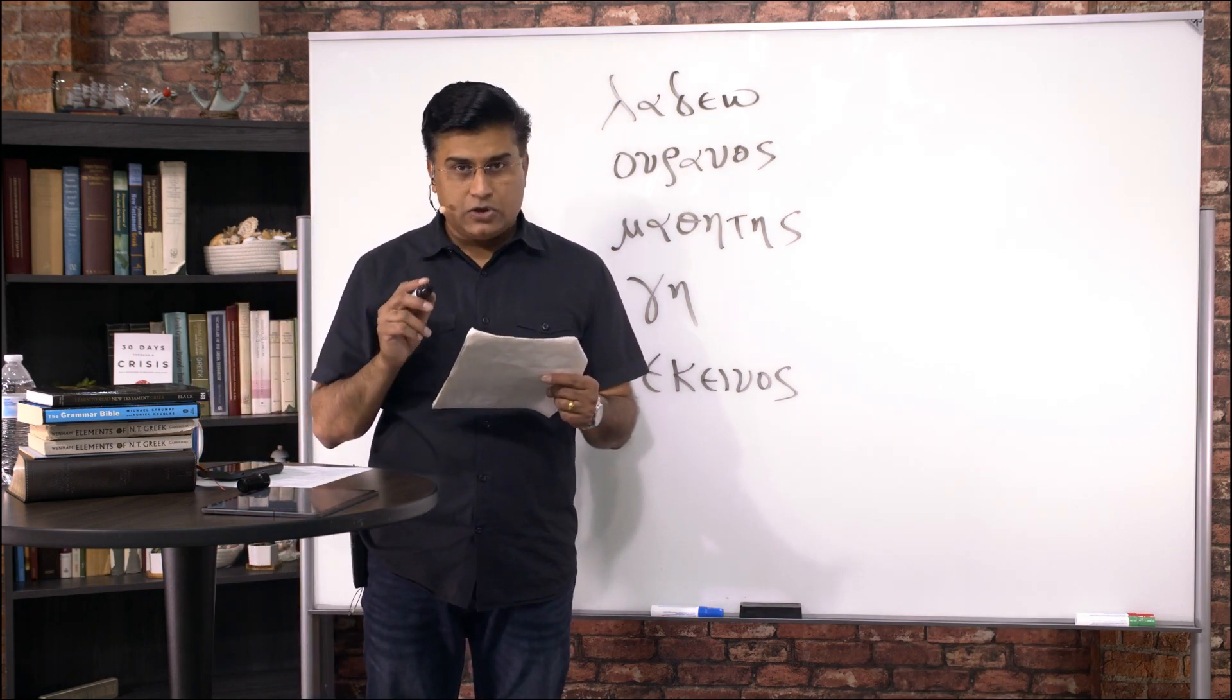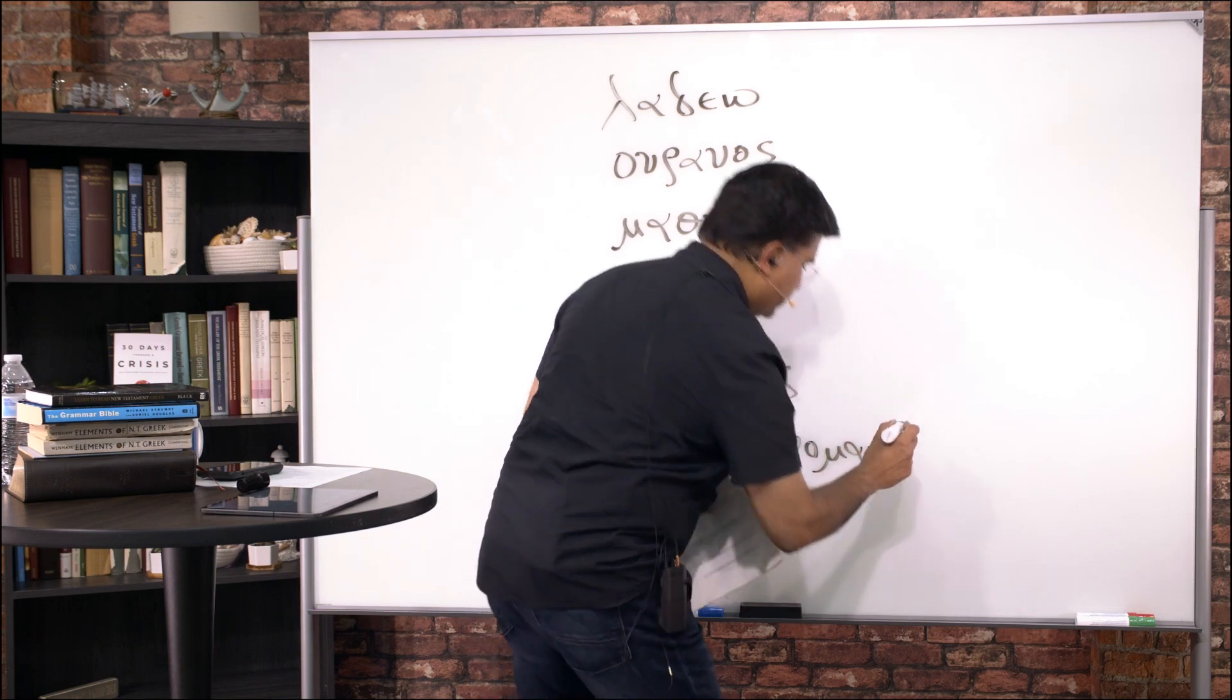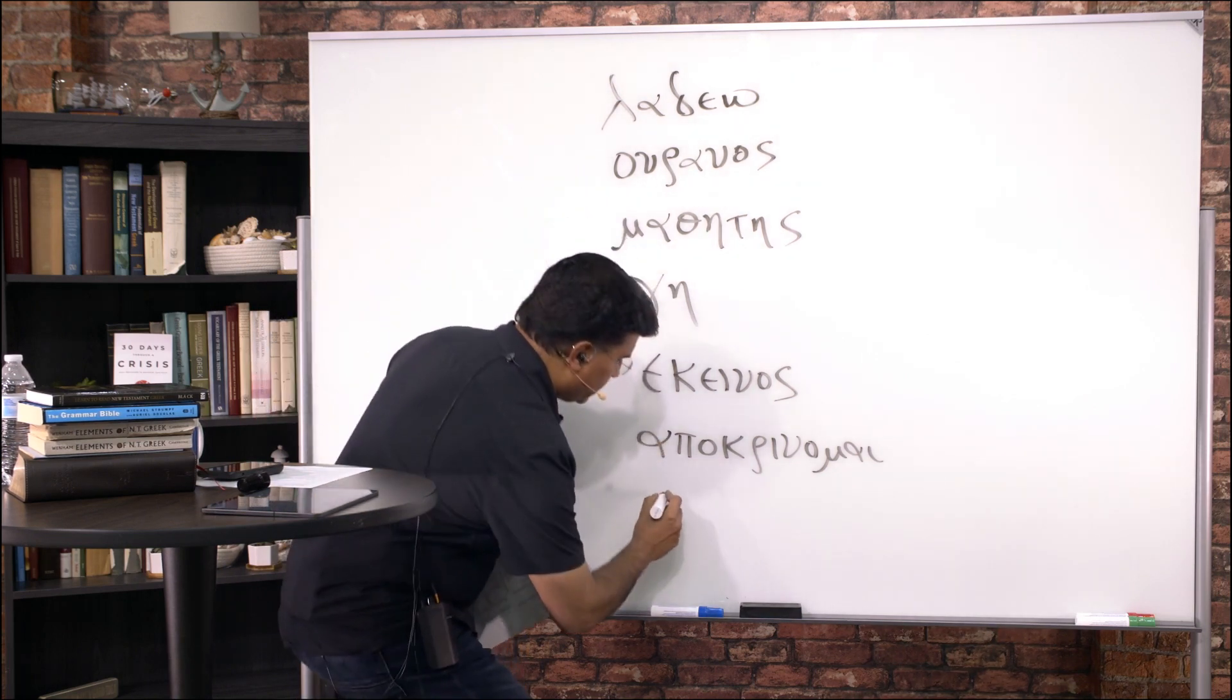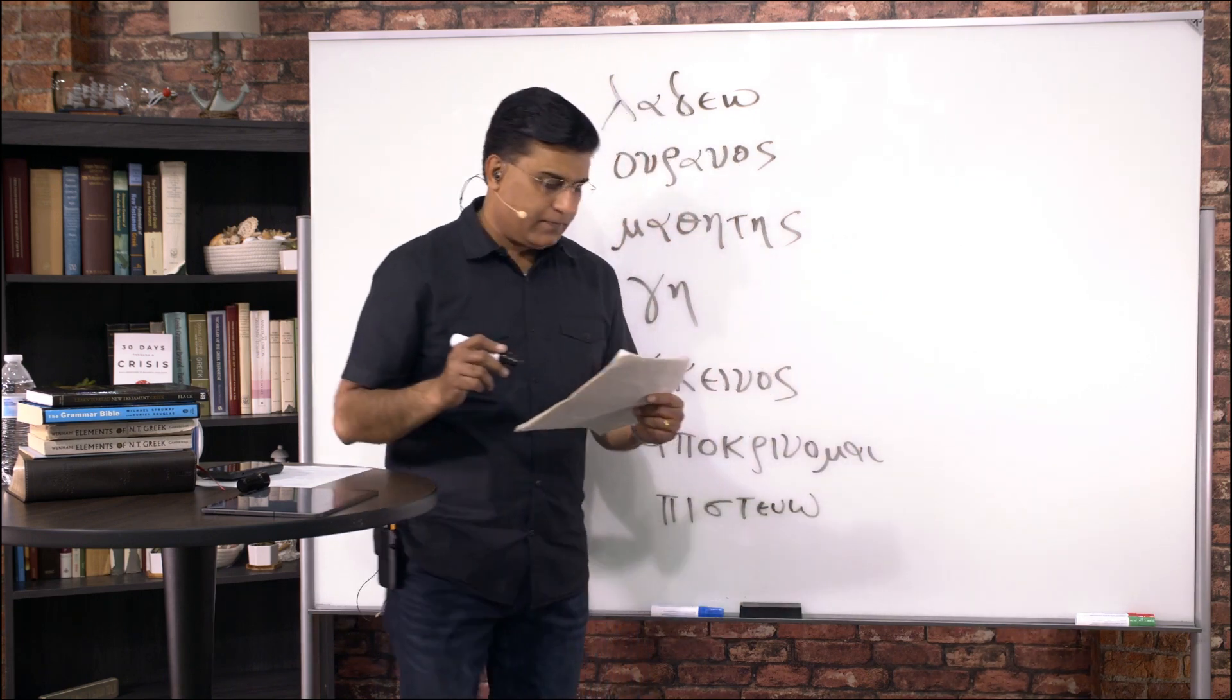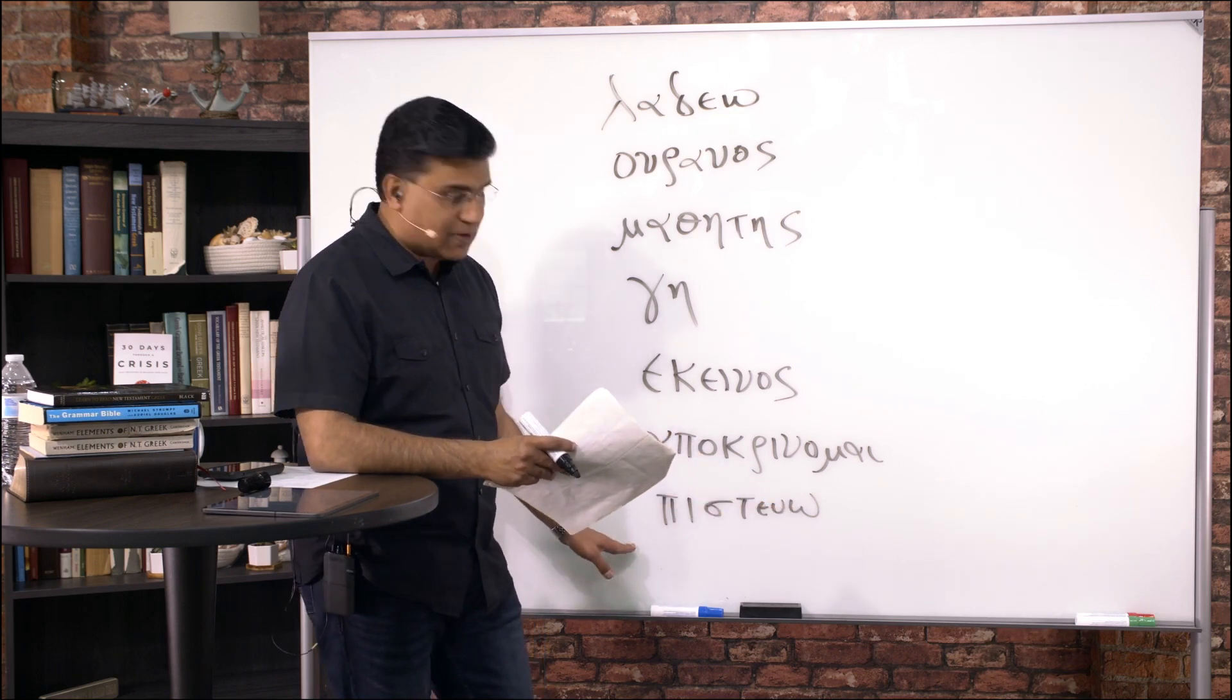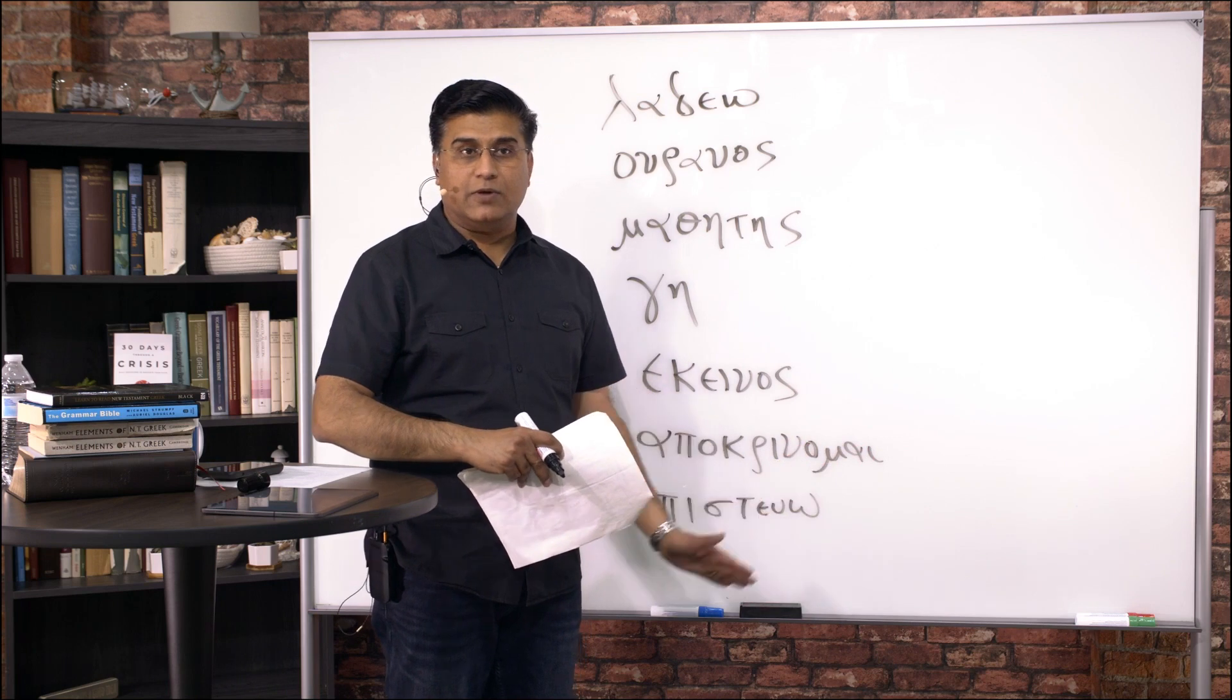Apokrinomai, to answer. Apokrinomai, to answer. Apokrinomai, to answer. Pisteu, to believe. Pisteu, to believe. Again, in modern and koine pronunciation, pisteu. But in Erasmian pronunciation, we're pronouncing every single consonant vowel. So it's pisteu, but more than likely pisteu.